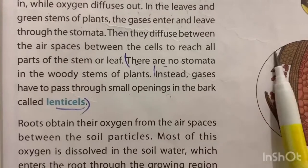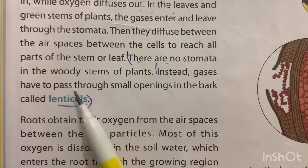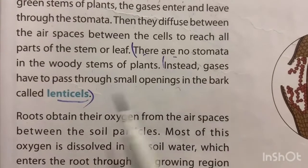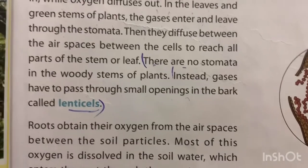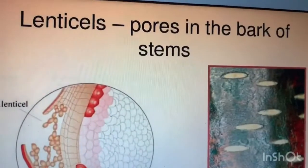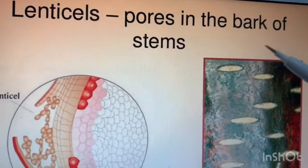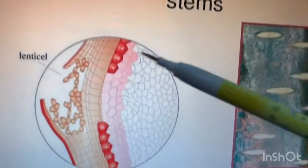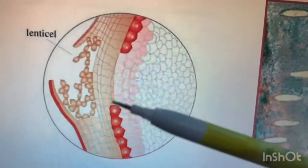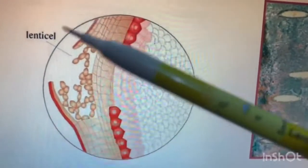Lenticels: gases have to pass through small openings in the bark called lenticels. Lenticels are the pores in the bark of the stem, as shown in the diagram.